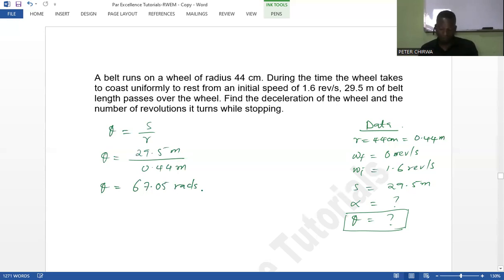But I can see that what I was given, the initial speed, is in revolutions per second. So I have to convert this one also to revolutions, since I've been asked the number of revolutions, not radians.